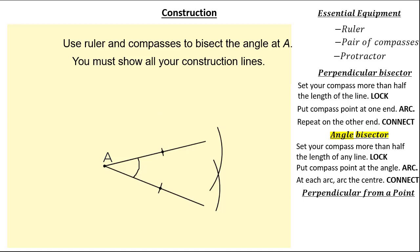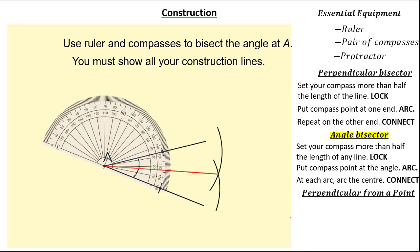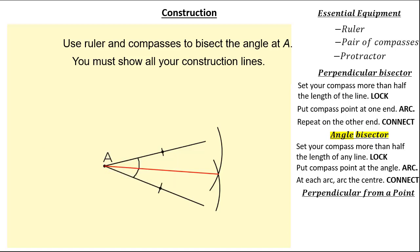All we need to do is connect. We can measure the angle using our protractor — you can see it's around about 34 degrees, and each angle is around about 17 degrees. So I've successfully done an angle bisection.